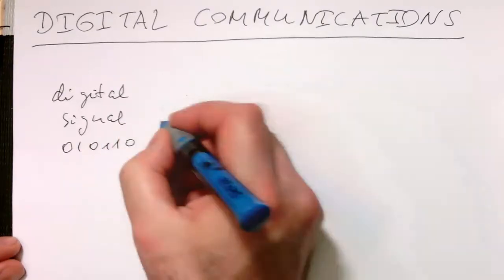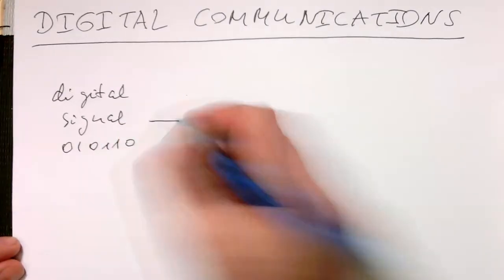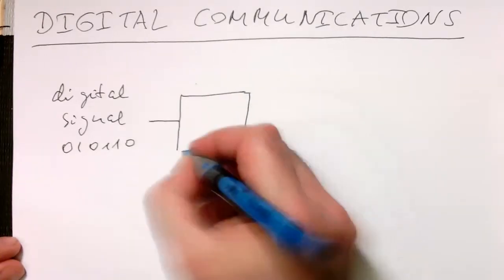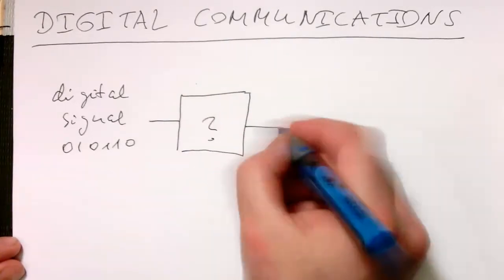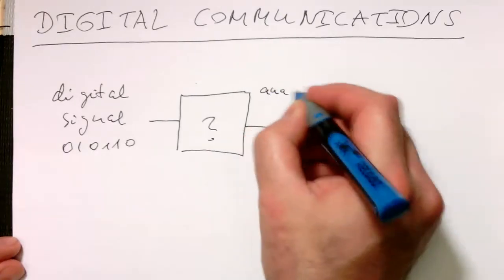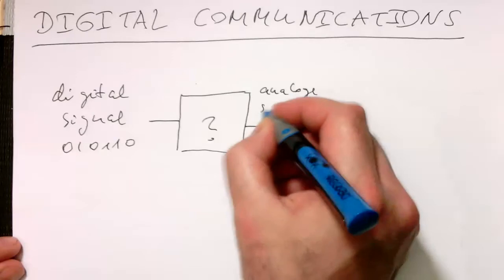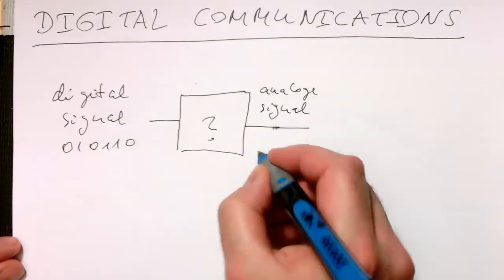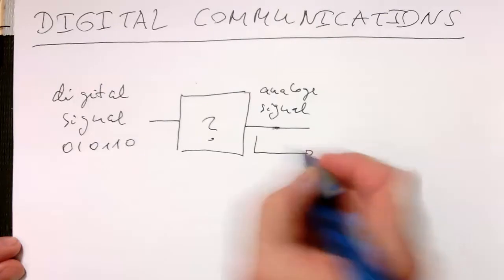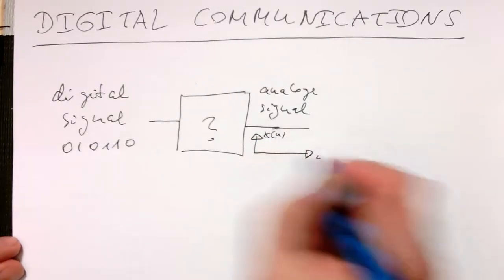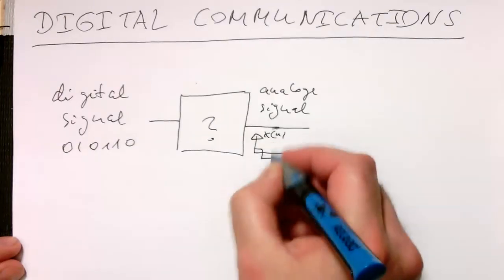We would like to turn that with the help of a magic box here into some kind of analog signal, so that at the end we have something like x of n, and then this looks like this and is transmitted.